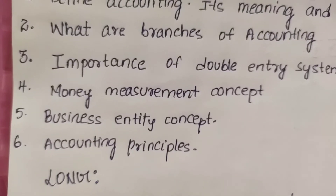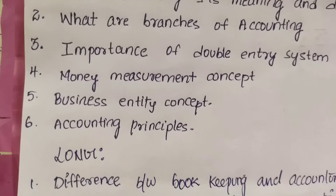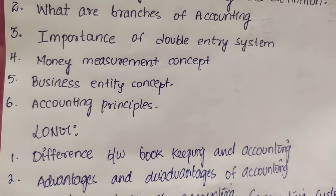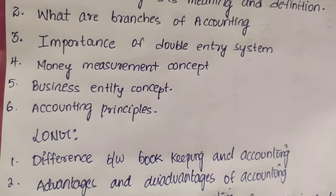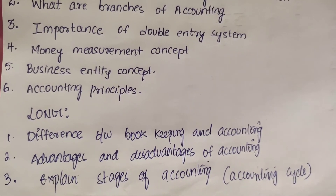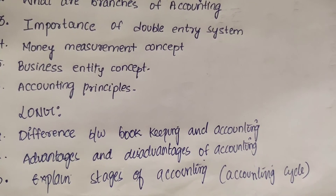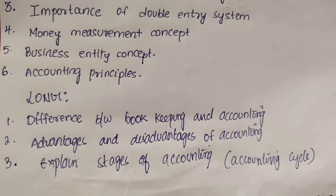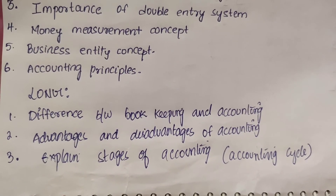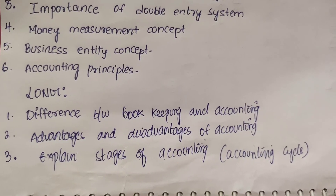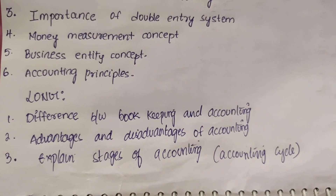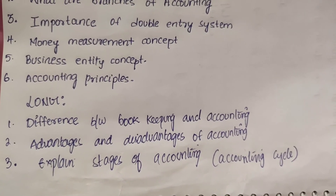Now, the Long Answers of Unit 1: 1st, the difference between Bookkeeping and Accounting. 2nd, Advantages and Disadvantages of Accounting. And the last one, explain the Stages of Accounting, which is nothing but the Accounting Cycle. If you get perfect in these three answers, then definitely in the exam you will get one of these. If you want the answers to these questions, comment down below.